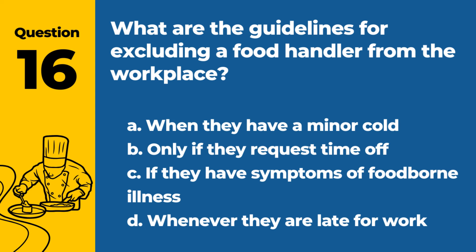Question 16. What are the guidelines for excluding a food handler from the workplace? a. When they have a minor cold. b. Only if they request time off. c. If they have symptoms of foodborne illness. d. Whenever they are late for work. Answer: c. If they have symptoms of foodborne illness. Food handlers should be excluded from the workplace if they have symptoms of foodborne illness to prevent contamination.